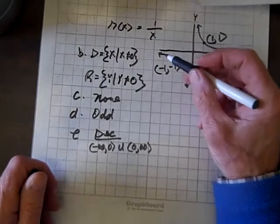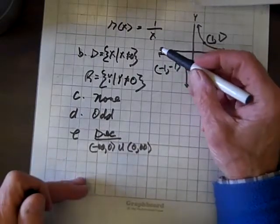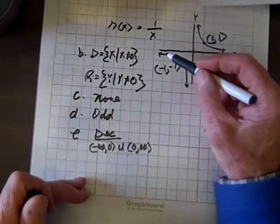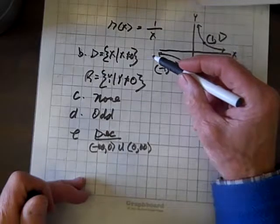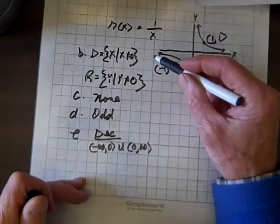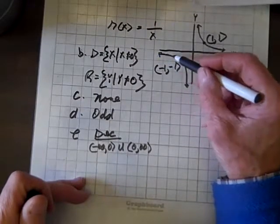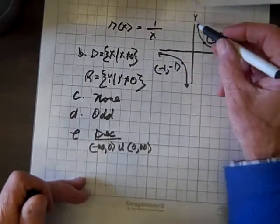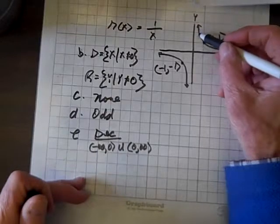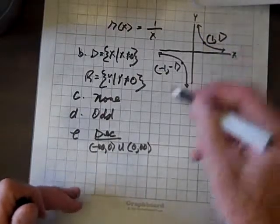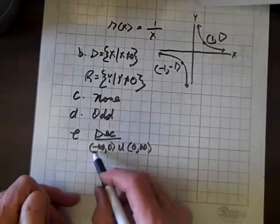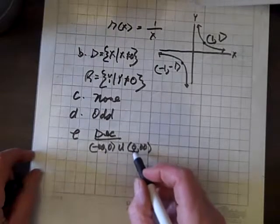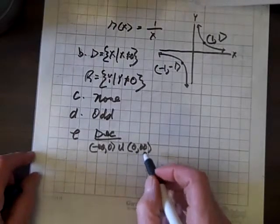Keep in mind, decreasing pertains to moving from left to right. As we move from left to right, from negative to positive, this function is always going downhill. So it's decreasing on the open interval (-∞, 0) in union with the open interval (0, ∞).